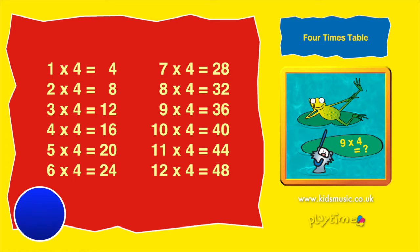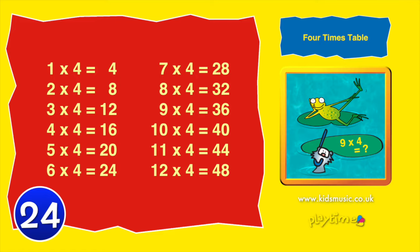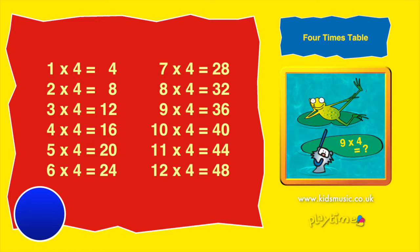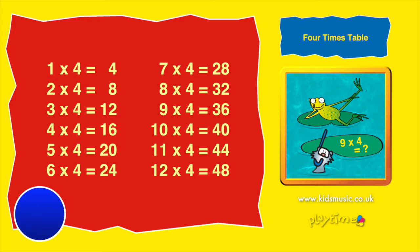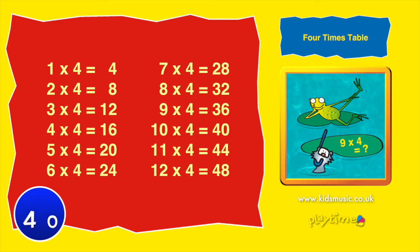Five times four is twenty. Six times four is twenty-four. Seven times four is twenty-eight. Eight times four is thirty-two. Nine times four is thirty-six. Ten times four is forty.